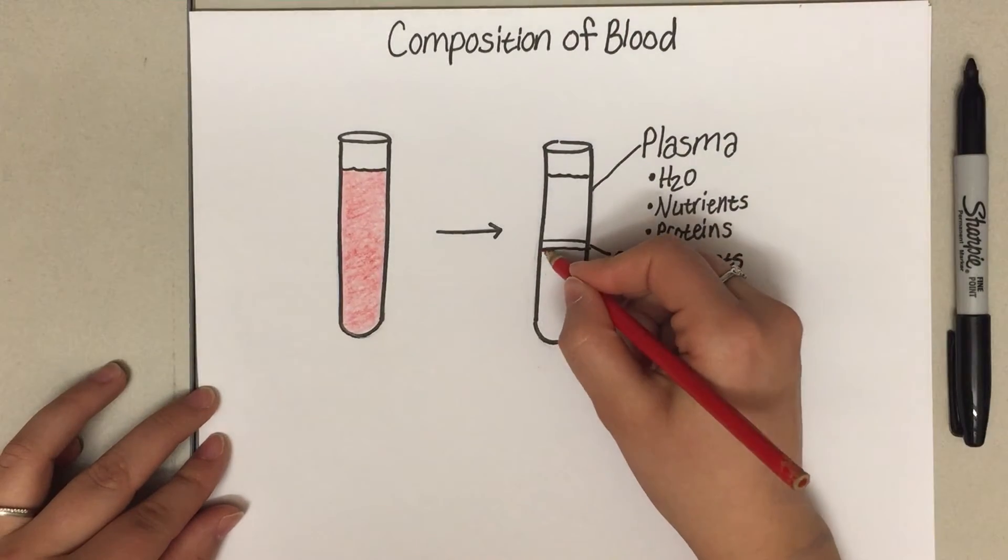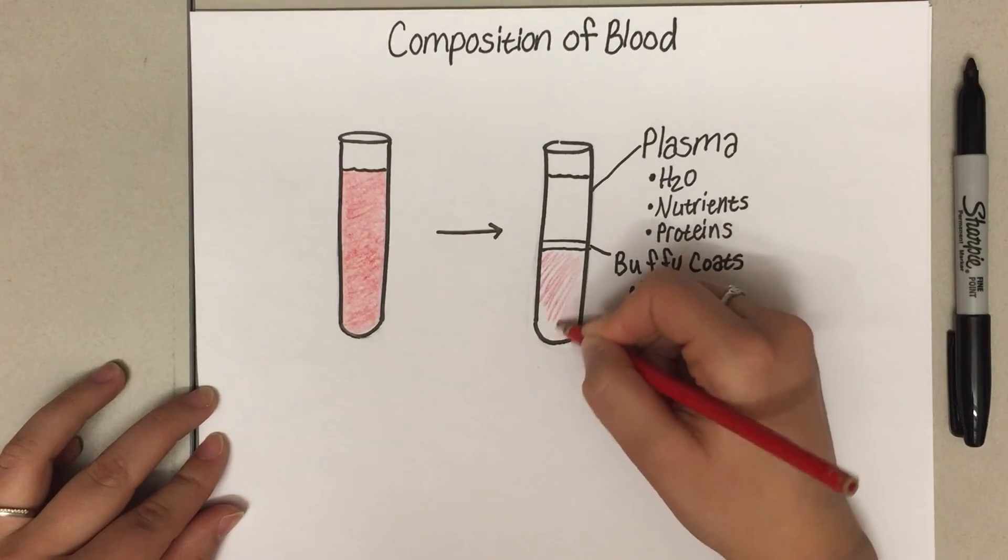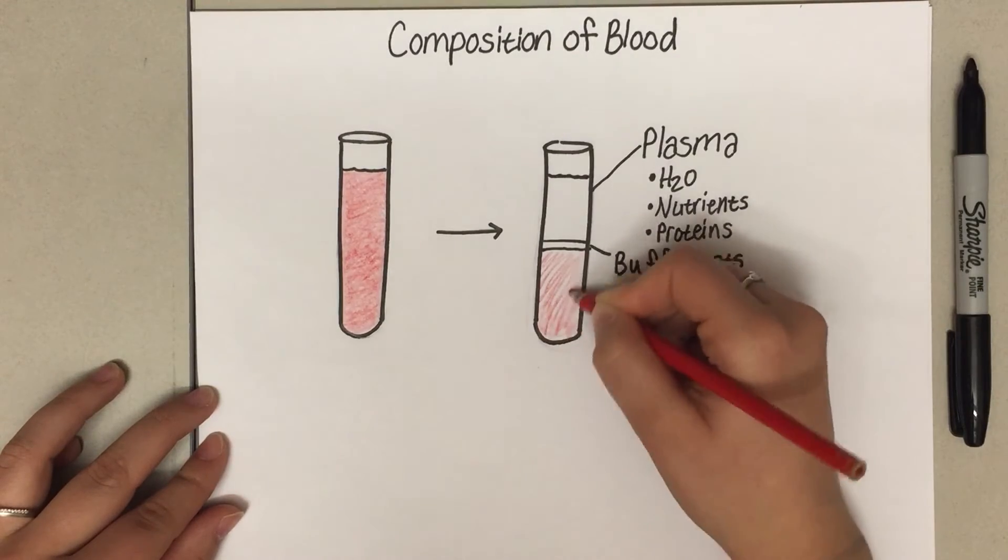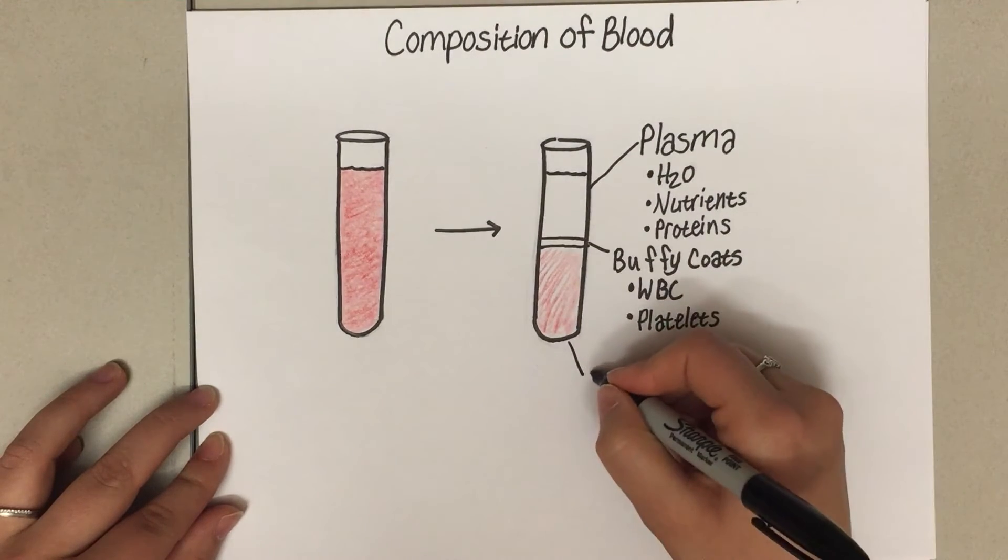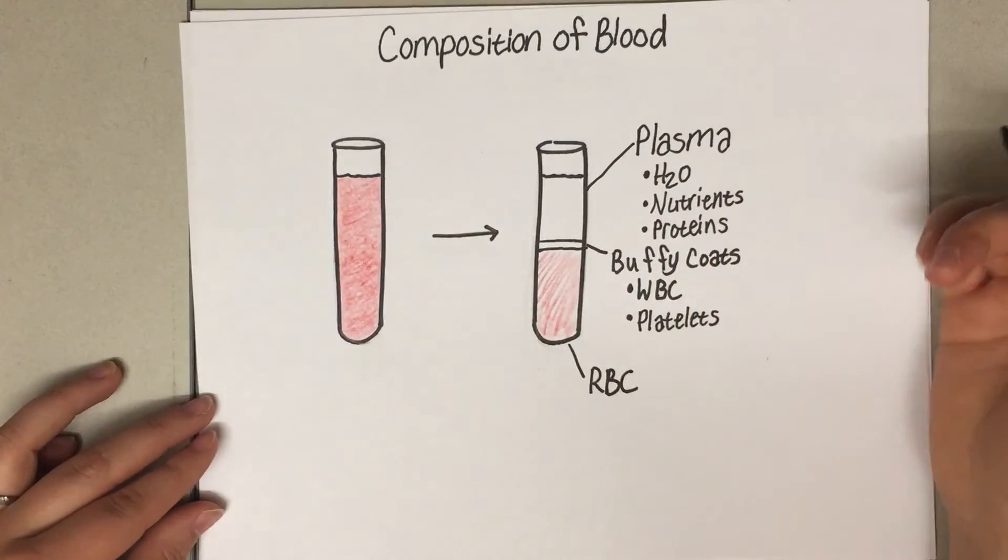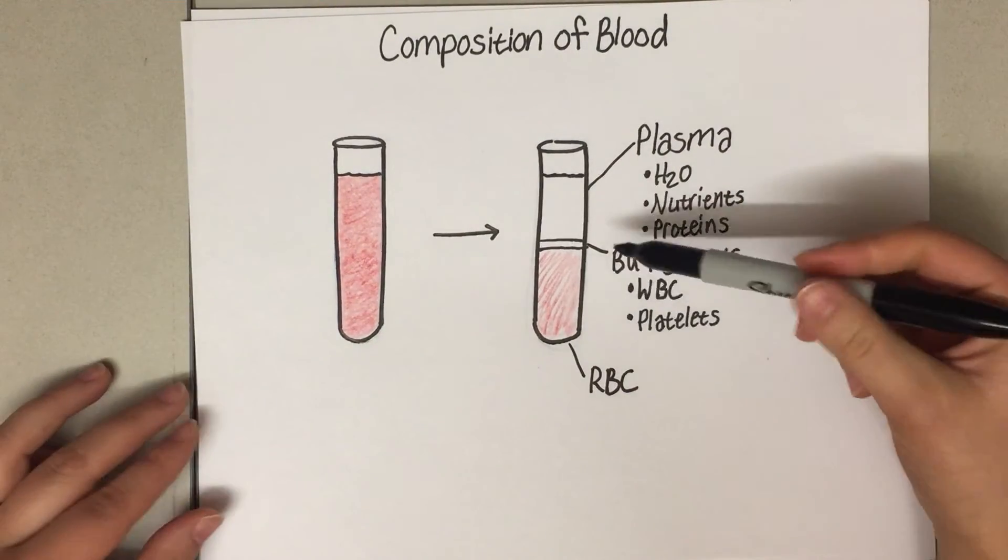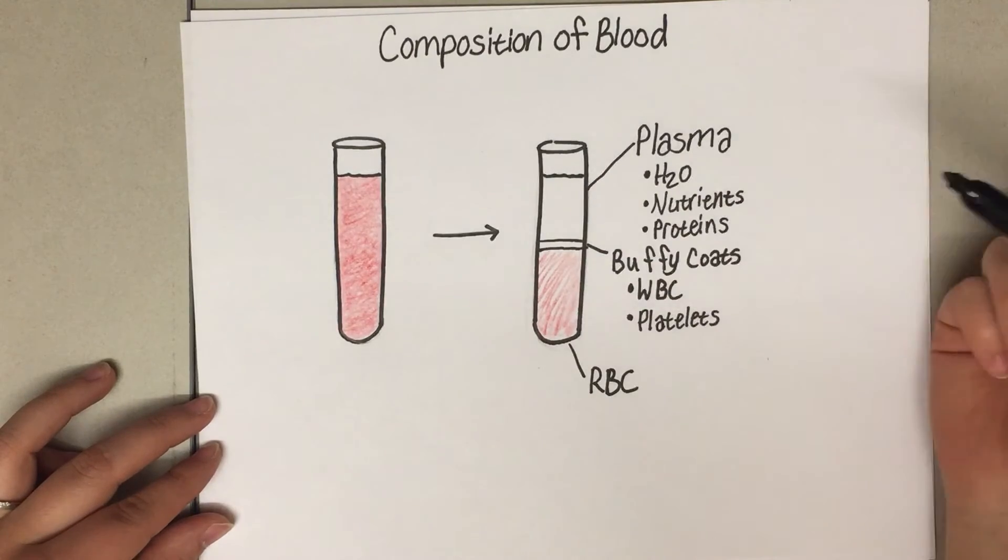The bottom layer here is the portion that contains the red blood cells. This is also referred to as the hematocrit. Hematocrit describes the percent of the total blood volume that is just red blood cells.